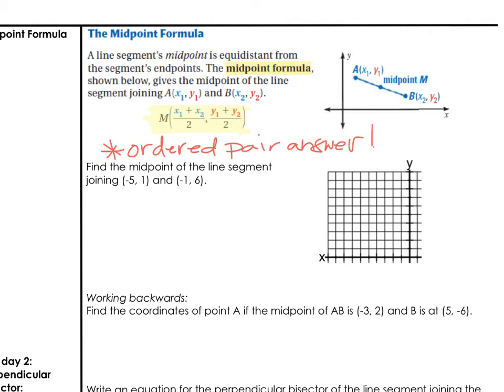It says find the midpoint of the line segment joining (-5, 1) and (-1, 6). Please plot those two points on the graph on the right and connect them. Once you connect that line segment to find the middle of that line segment, we will apply the midpoint formula.